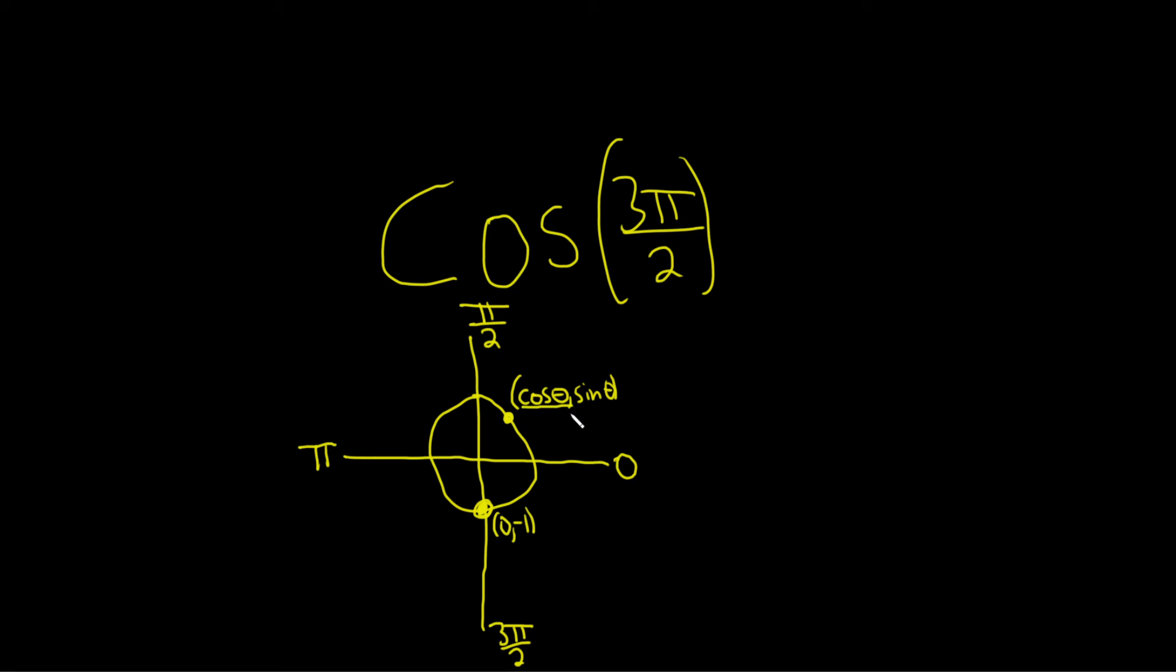Cosine is the x coordinate. And we're at 3π over 2, so that means that the cosine of 3π over 2 is equal to 0. Just a really quick way to figure it out. I hope this video has been helpful.